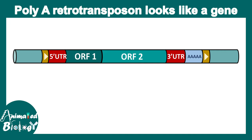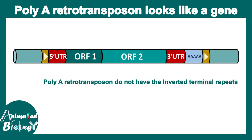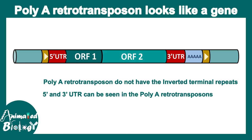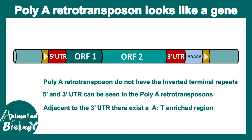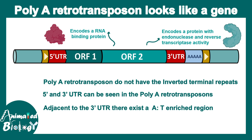Let's look at the structure of a LINE, or poly-A retrotransposon, in more detail. It doesn't have an LTR, but it has a stretch of poly-A tail typical of eukaryotic genes, along with 5' and 3' UTRs. Adjacent to the 3' UTR there is an AT-rich sequence which is important for integration. ORF1 and ORF2 encode multiple proteins — ORF2 encodes an RNA binding protein and another protein with endonuclease and reverse transcriptase activity, both essential for LINE retrotransposon function.